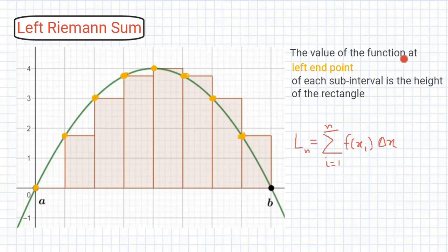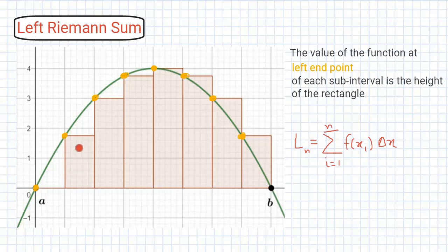If the value of the function at the left endpoint of each subinterval is the height of the rectangle, then it is the Left Riemann sum. For the first subinterval, the function value at the left endpoint is zero, so the height of the rectangle is zero. For the next subinterval, the function value at the left endpoint defines the height of that rectangle, and similarly for the remaining rectangles. The formula is given by L_n = summation i equal to 1 to n of f(x_i) times delta x.